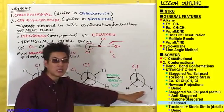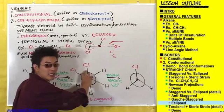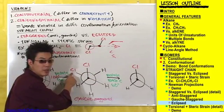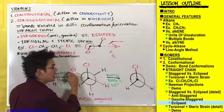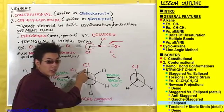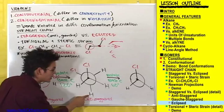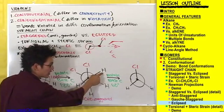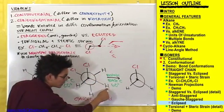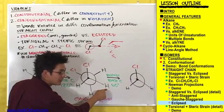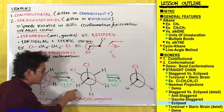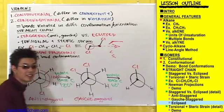Since we have rotated this back carbon 60 more degrees, the chlorine that used to be in gauche position is going to now rotate directly behind this chlorine in front. The same thing happens to the hydrogens — this hydrogen rotates 60 degrees to be directly behind this front hydrogen, and this hydrogen rotates directly behind the other front hydrogen.